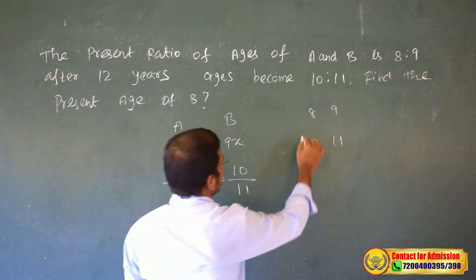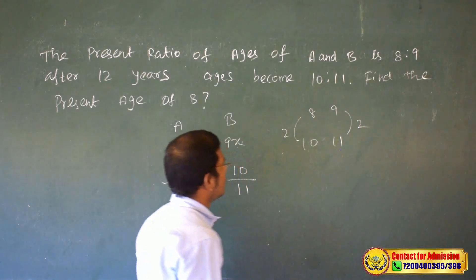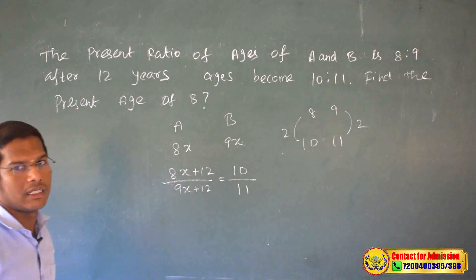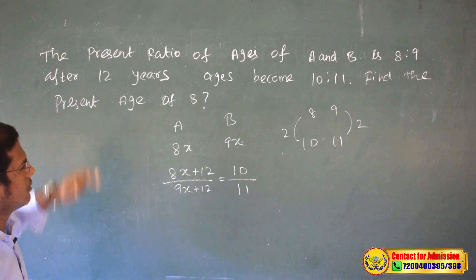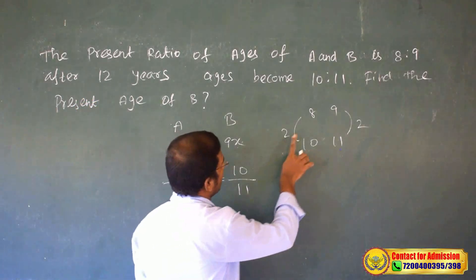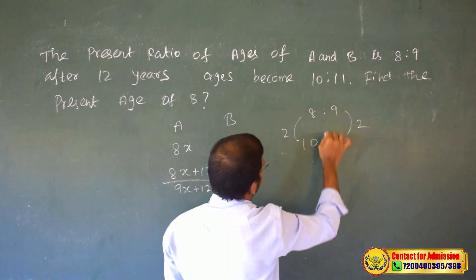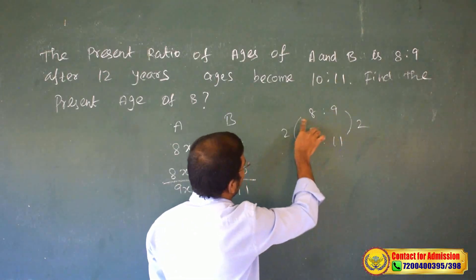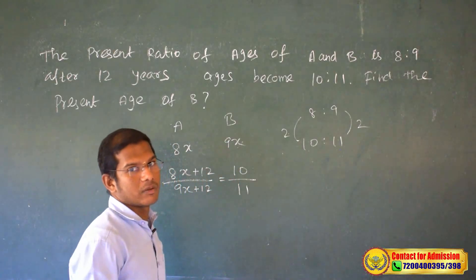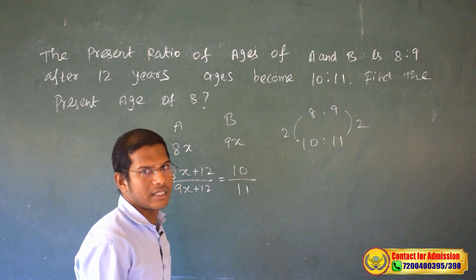Now looking at the difference and the increase: the difference is 2, and the increase gives us 2x equals a value, which we use to find x.